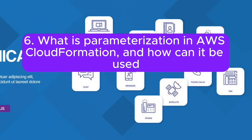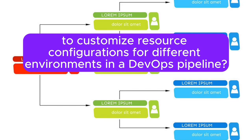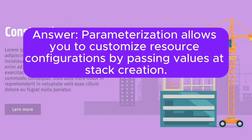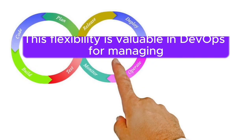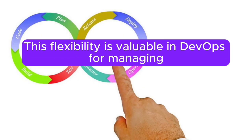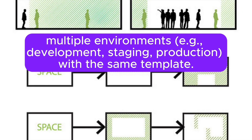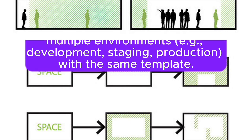Question 6: What is parameterization in AWS CloudFormation, and how can it be used to customize resource configurations for different environments in a DevOps pipeline? Answer: Parameterization allows you to customize resource configurations by passing values at stack creation. This flexibility is valuable in DevOps for managing multiple environments — for example, development, staging, and production — with the same template.